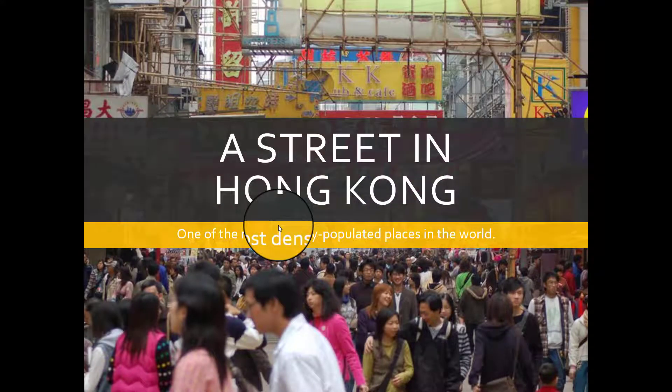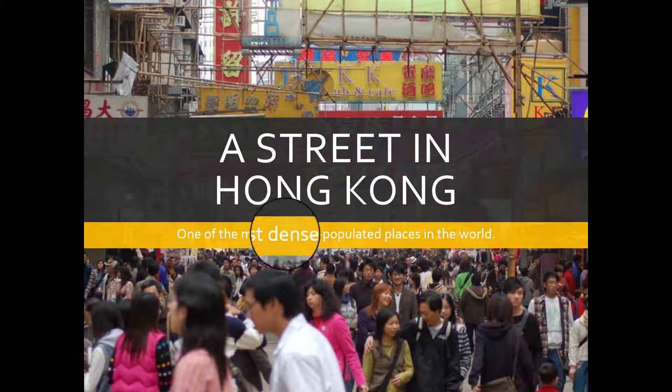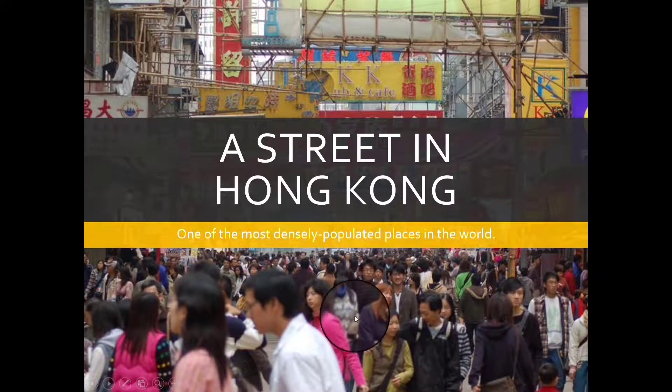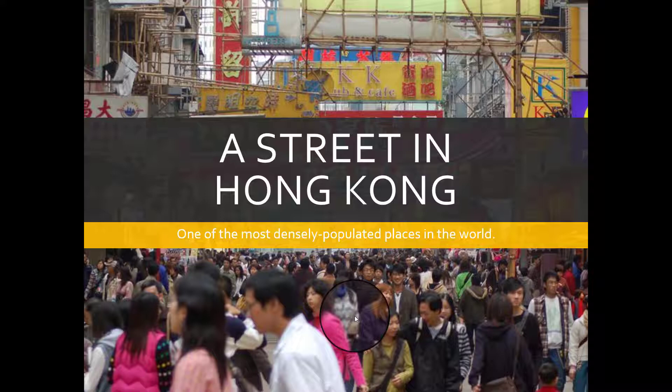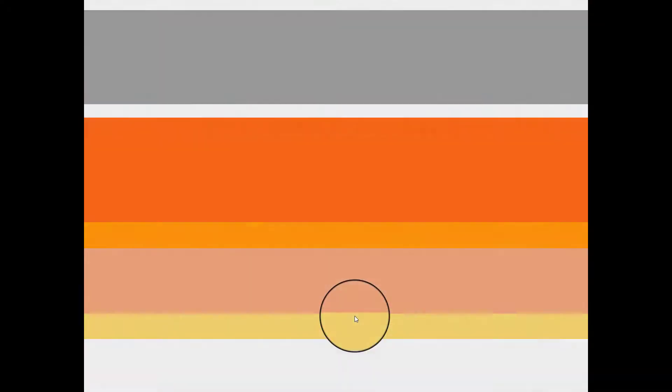Here's an example of population density: a street in Hong Kong, which is one of the most densely populated places in the world. As you see here, there's a lot of people in this street compared to maybe where you would say in your neighborhood where there's not that many people walking along the street. It all depends on where you live and the amount of people that occupy that particular place.